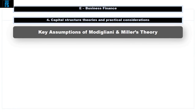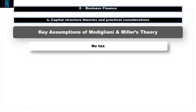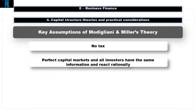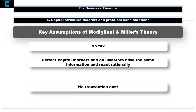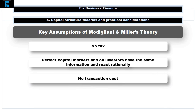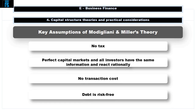There are a few key assumptions that Modigliani and Miller's theory makes. Firstly, that there is no corporation tax. Secondly, that it operates in perfect capital markets where all investors have the same information and react rationally to it. And finally, that there are no transaction costs and that debt is risk free.